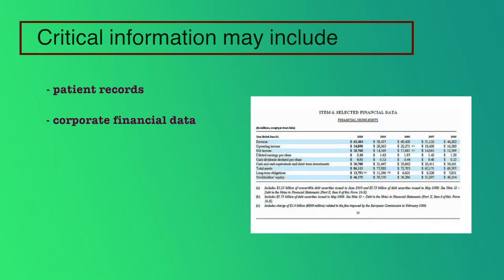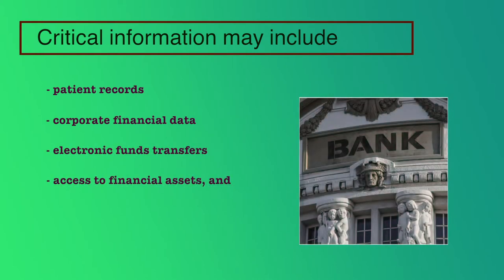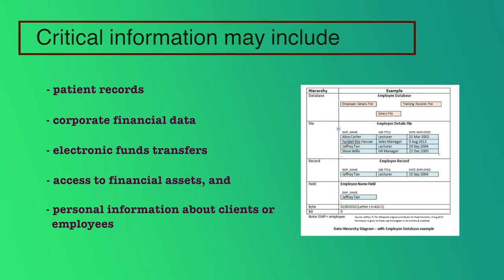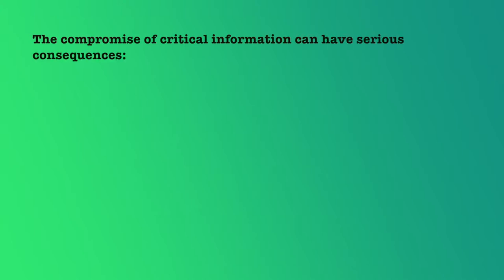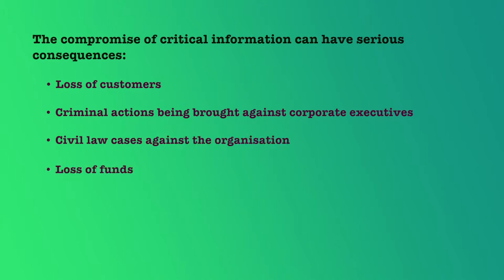Typically, many organizations have information that has value that justifies expensive protection mechanisms. Critical information may include patient records, corporate financial data, electronic fund transfers, access to financial assets, and personal information about clients or employees. The compromise of critical information can have serious consequences including loss of customers, criminal actions against corporate executives, civil law cases against the organization, loss of funds, loss of trust, and the collapse of the organization.